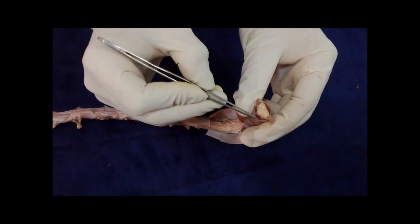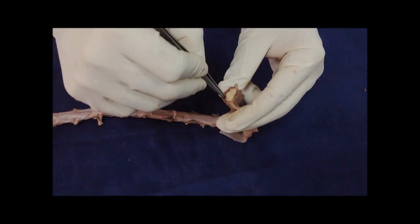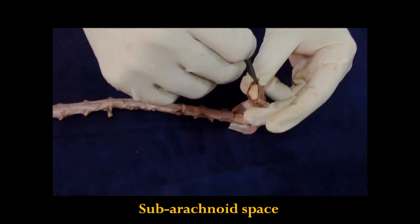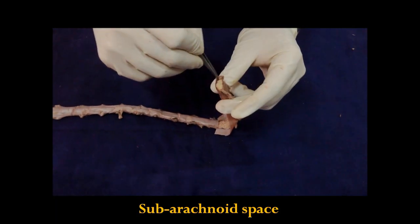This is arachnoid, and after that there is a broad space called subarachnoid space. Here this is the subarachnoid space. It is filled with cerebrospinal fluid.